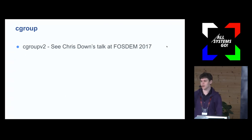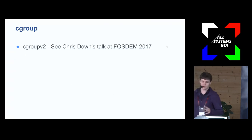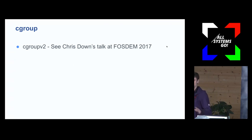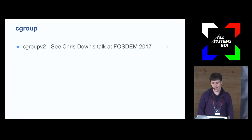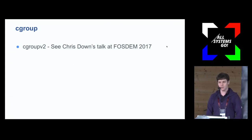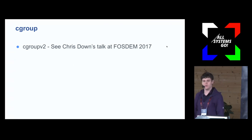I'm going to talk about cgroups, and I'll exclusively talk about cgroup v2. If you want to know the differences, please see Chris Down's talk at FOSDEM 2017. Show of hands: who here is familiar with cgroups? Good chunk of people. Who is familiar with the distinction between cgroup v2 and cgroup v1? Also a pretty good set. I'll give a very high-level overview of cgroups — they're basically the Linux kernel mechanism for doing resource control.